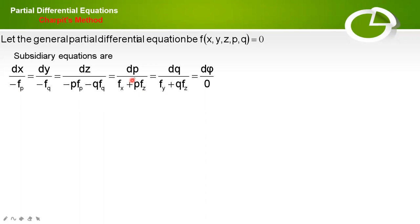From the subsidiary equation, you have to find either p or q. After finding p or q, substitute that value in the given equation. Then, using z equal to p dx plus q dy, you can find the solution of the given differential equation.